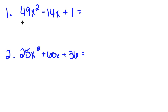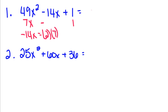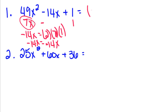So, is this a perfect square? The square root of 49 is 7, and the square root of x squared is x. The square root of 1 is 1. And is negative 14x equal to 2 times 7x times 1? Well, negative 14x is equal to 14x in magnitude. So that means it is a perfect square trinomial. When we go to factor it, we take a — which we already found was 7x — minus b, since this is a negative 14, and the square root of b, which is 1, squared.